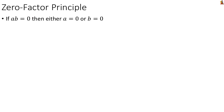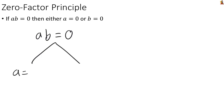So if you ever have two things multiplied together and the result is 0, you can always split it into two possibilities. One possibility is that a equals 0, and the other possibility is that b equals 0. We can use this fact to take a single complicated equation and break it into two simple equations, as we'll see. But before we get to that, let's do a simple example.